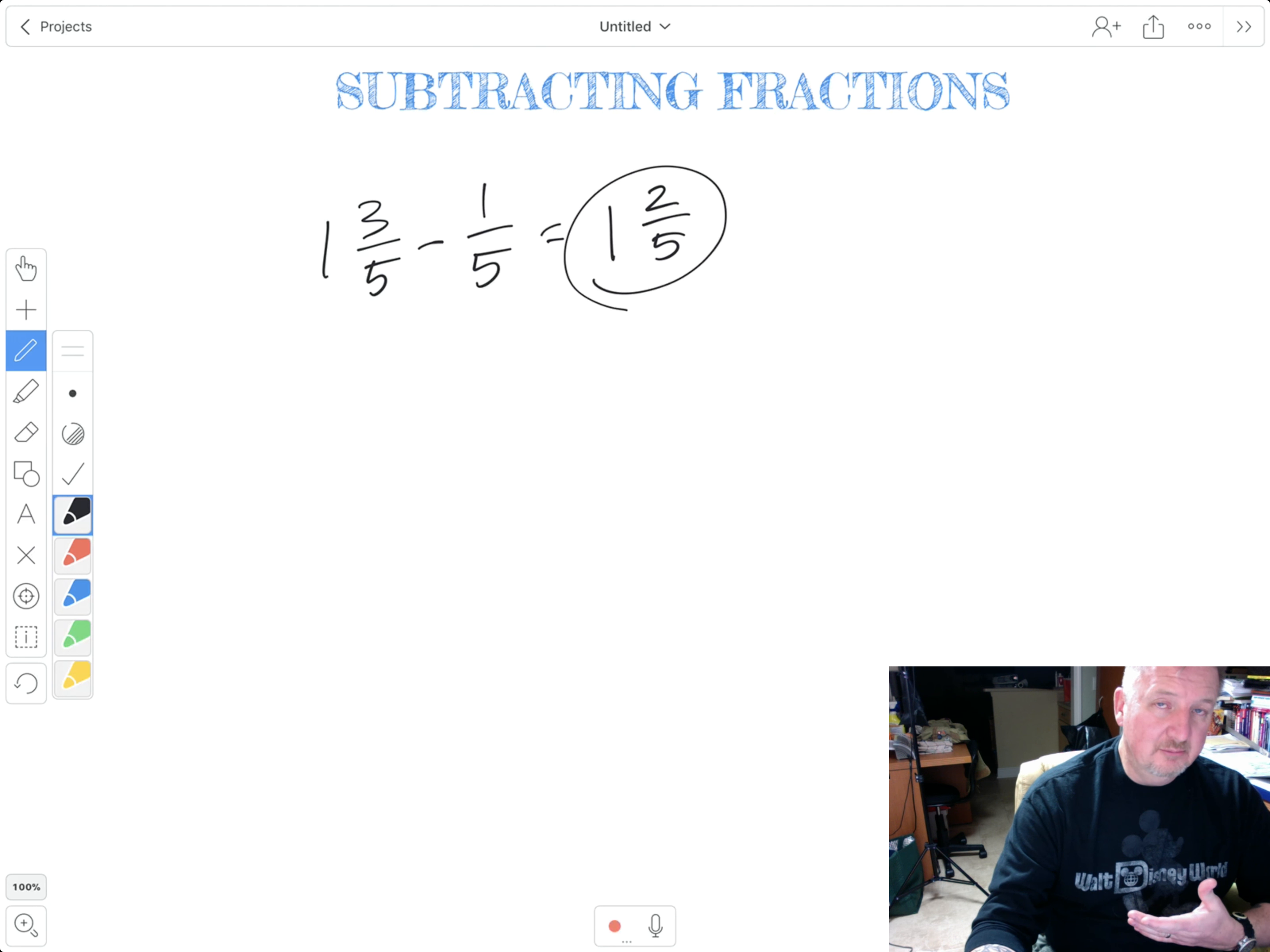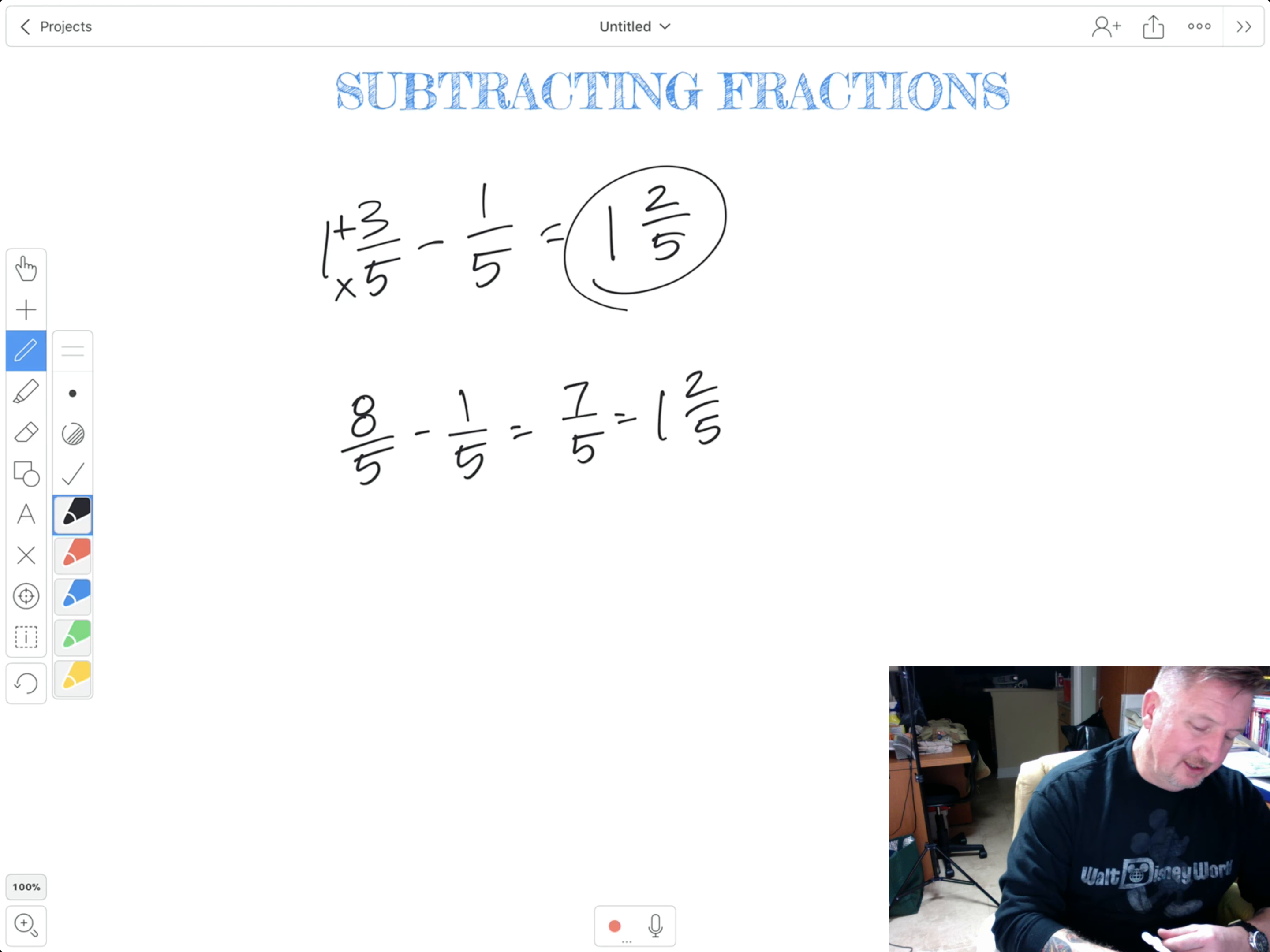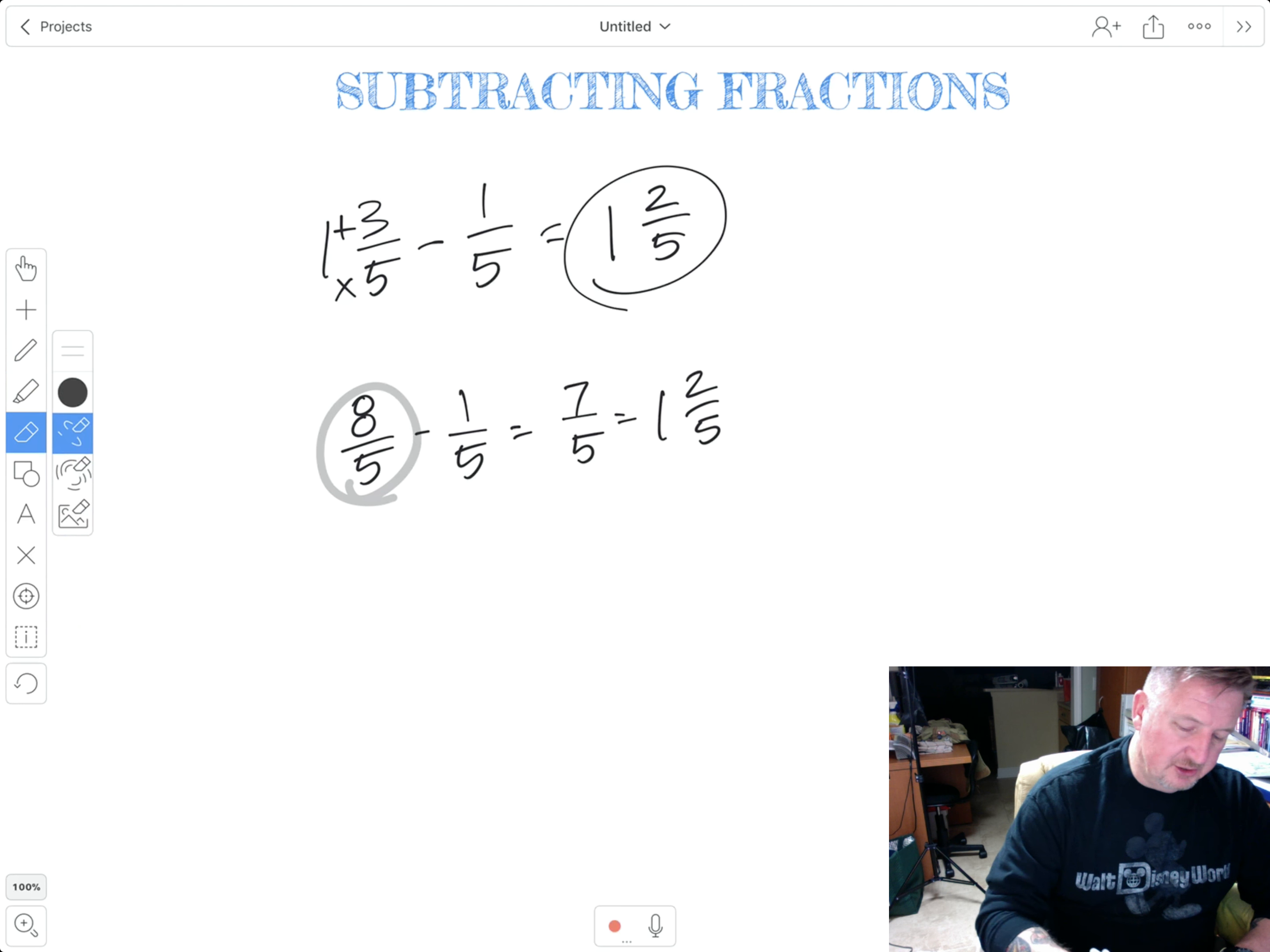Another alternative is to turn the mixed number into an improper fraction where I would multiply this and add this. Five times one plus three is eight fifths minus one fifth. And then you can just subtract and get seven fifths. Seven fifths is improper. So you would divide. So it would go one and then you would have two remainder over five. So same thing, really. I actually kind of like the idea of turning a mixed number into an improper fraction. That may be the way to go.